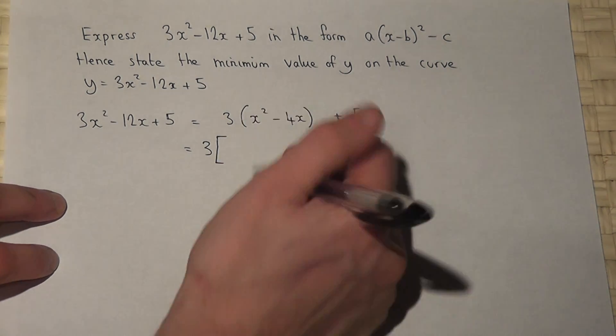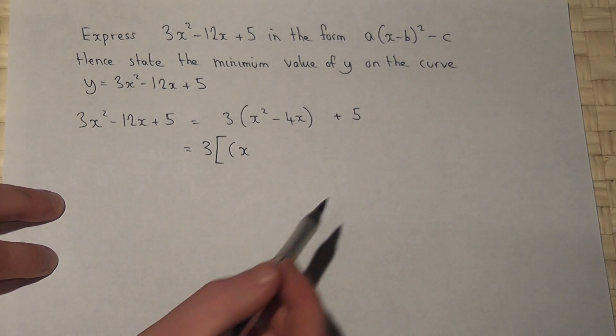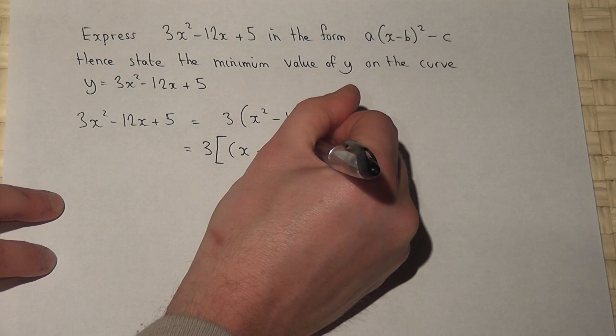Now, to complete the square, I put an x, and I have the coefficient of x, so minus 2, and put a square.